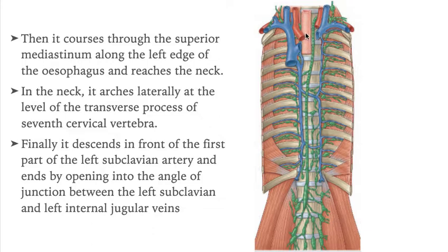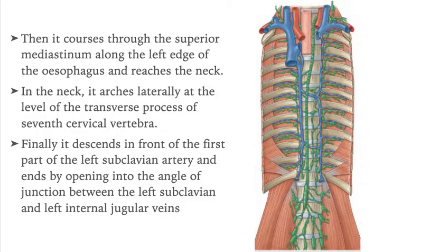This is the esophagus. In the neck, the thoracic duct arches laterally at the level of the transverse process of the 7th cervical vertebra. Finally, it descends in front of the first part of the left subclavian artery and ends by opening into the angle between the junction of the left subclavian and the left internal jugular veins.